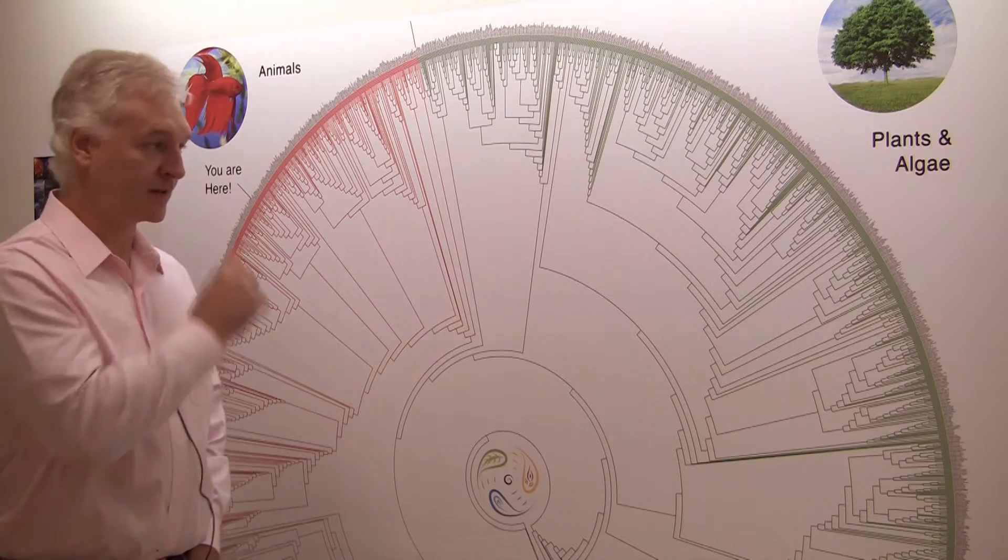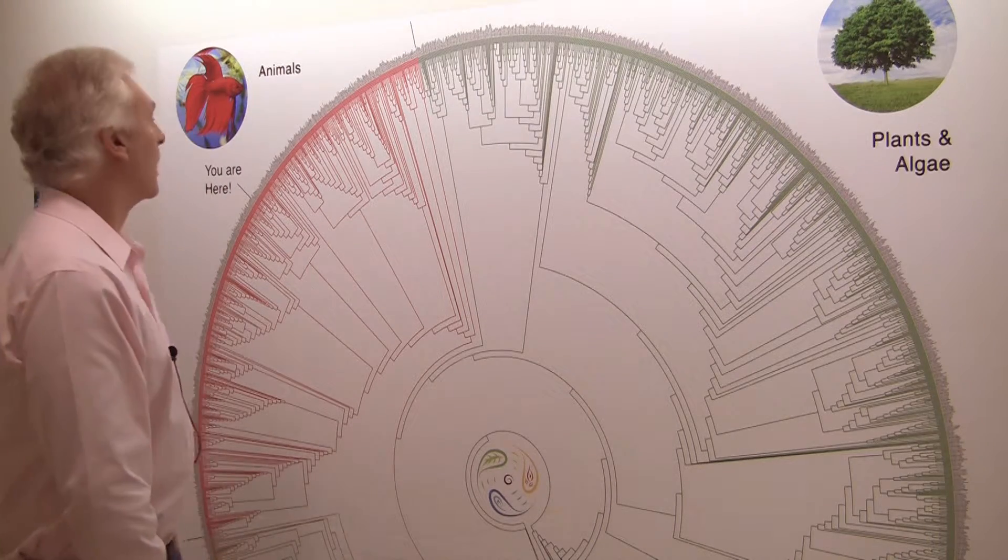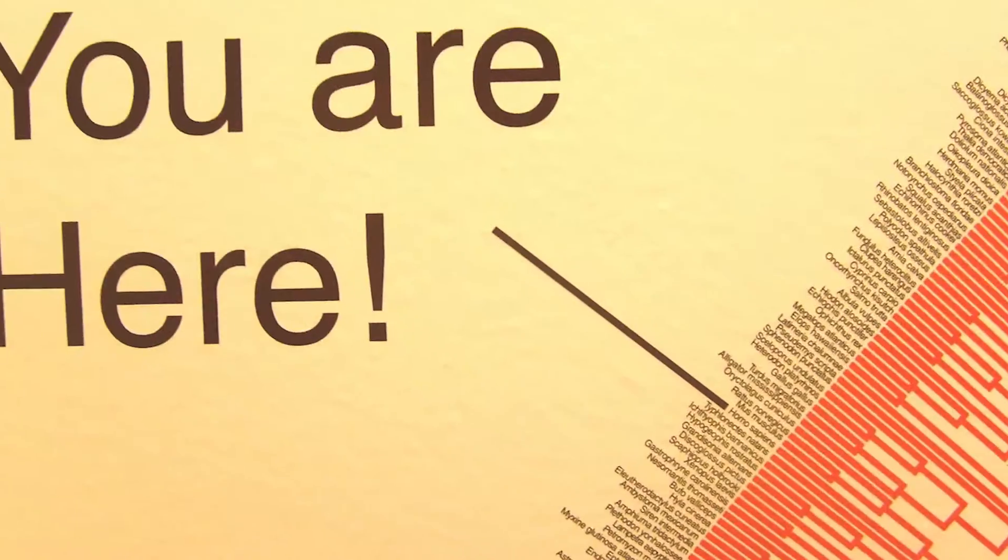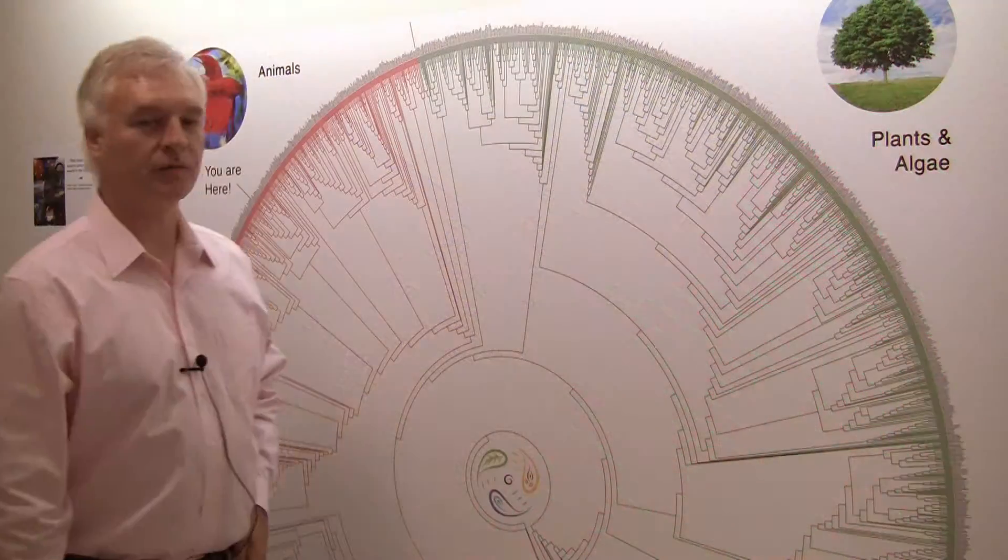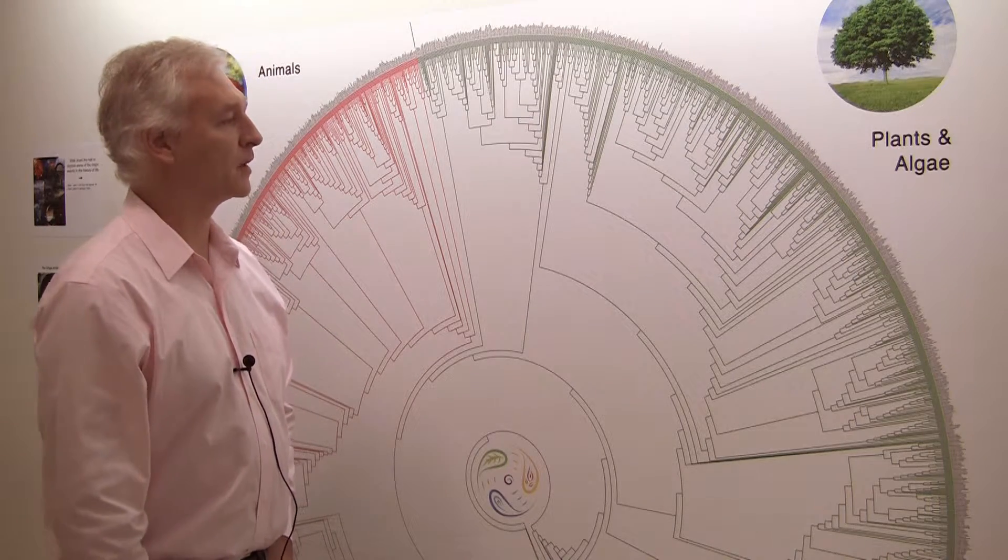What I'm showing here behind me is a circle of life, if you will. We're right up here, this one little branch here, Homo sapiens. We're just one of 2,000 or 2,500 twigs represented on this phylogeny.